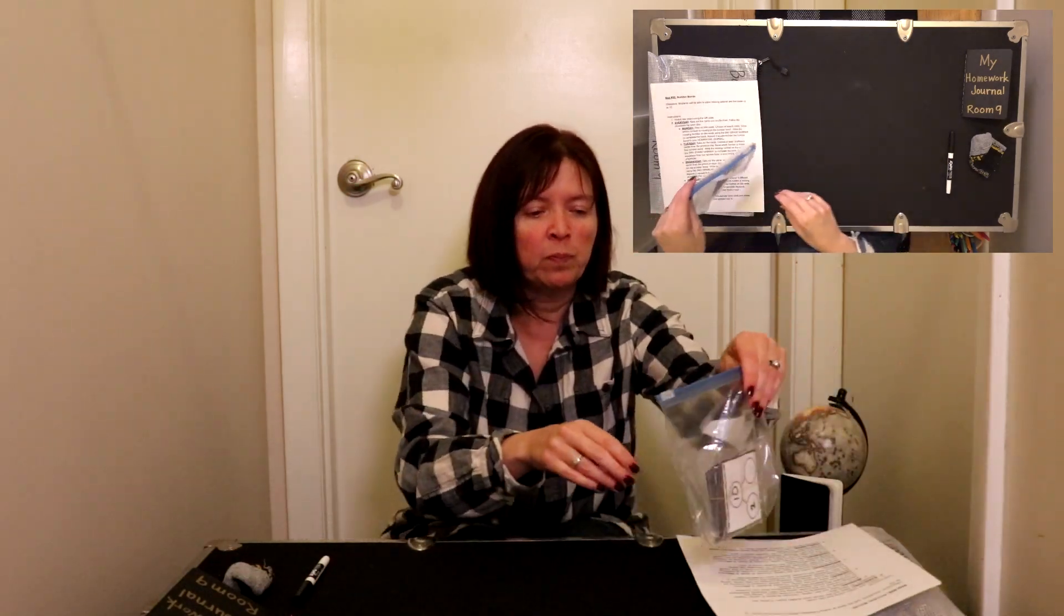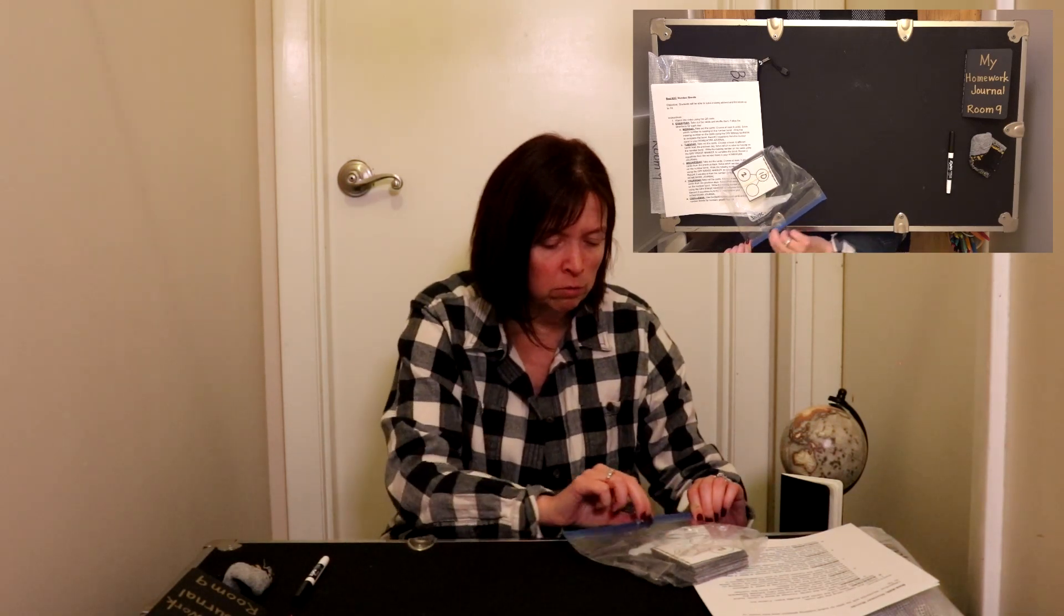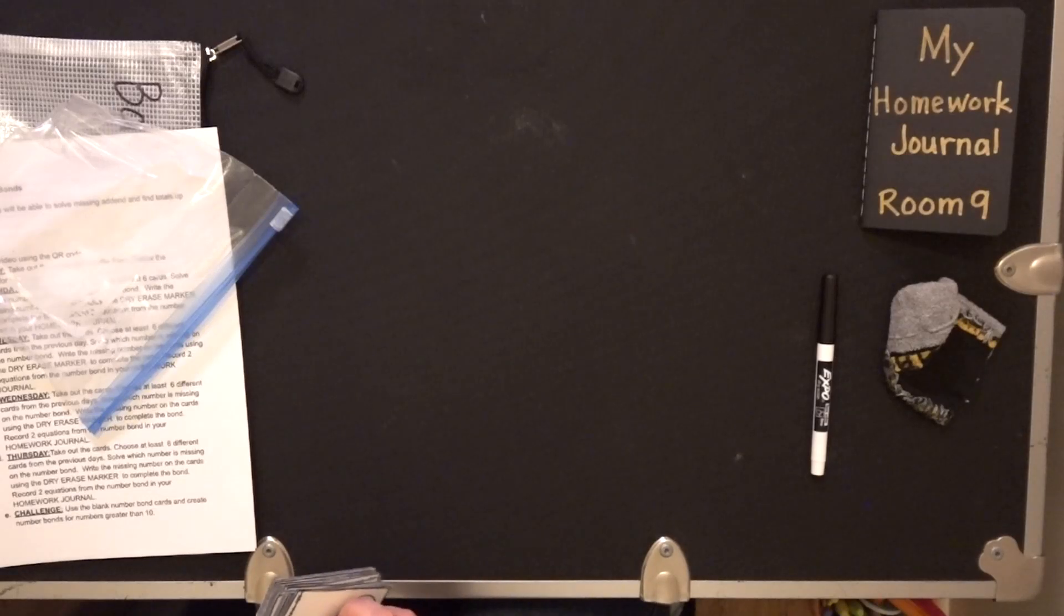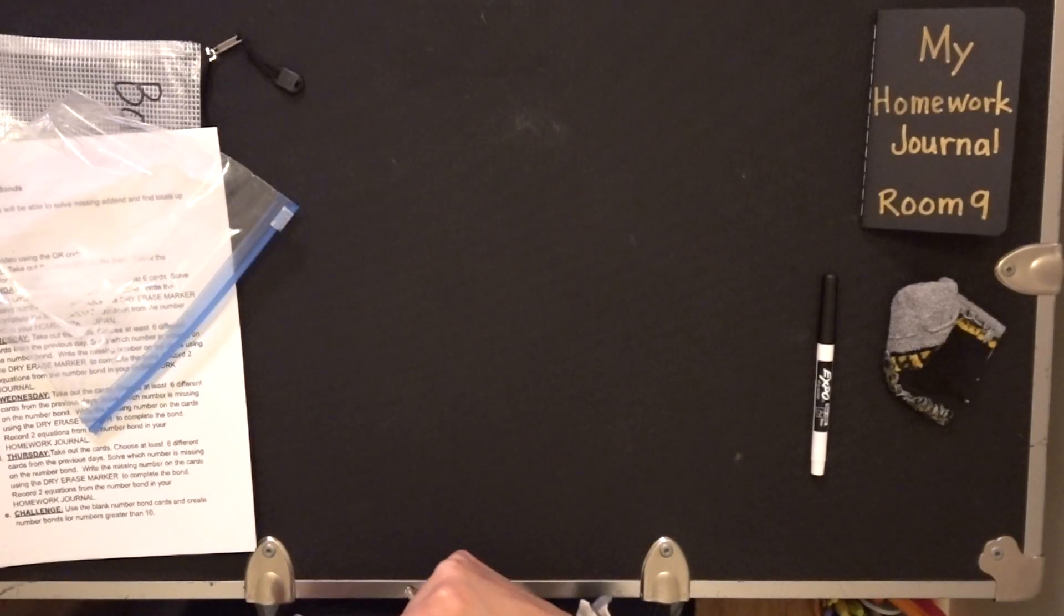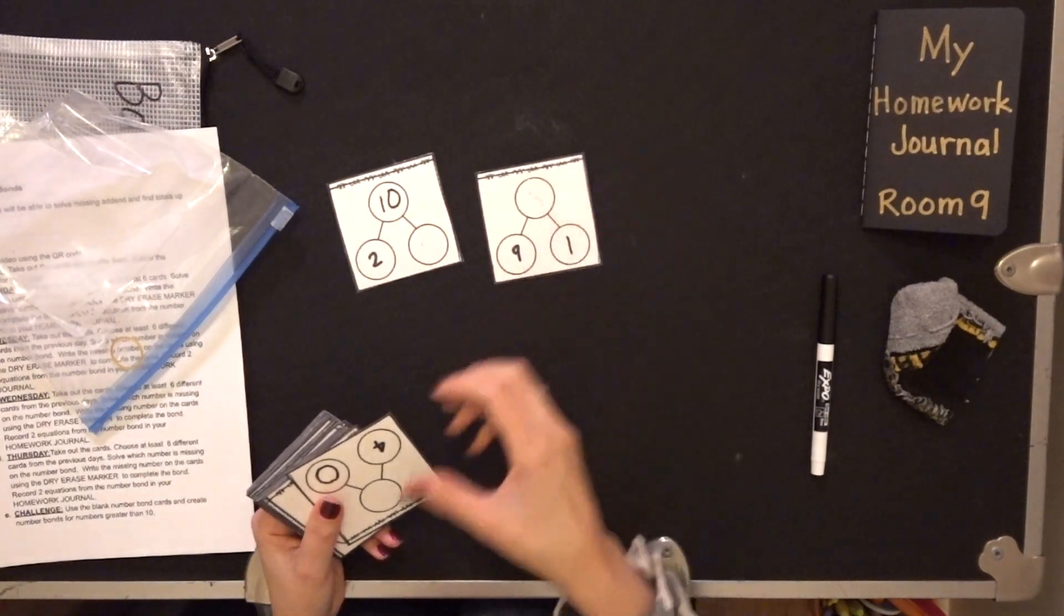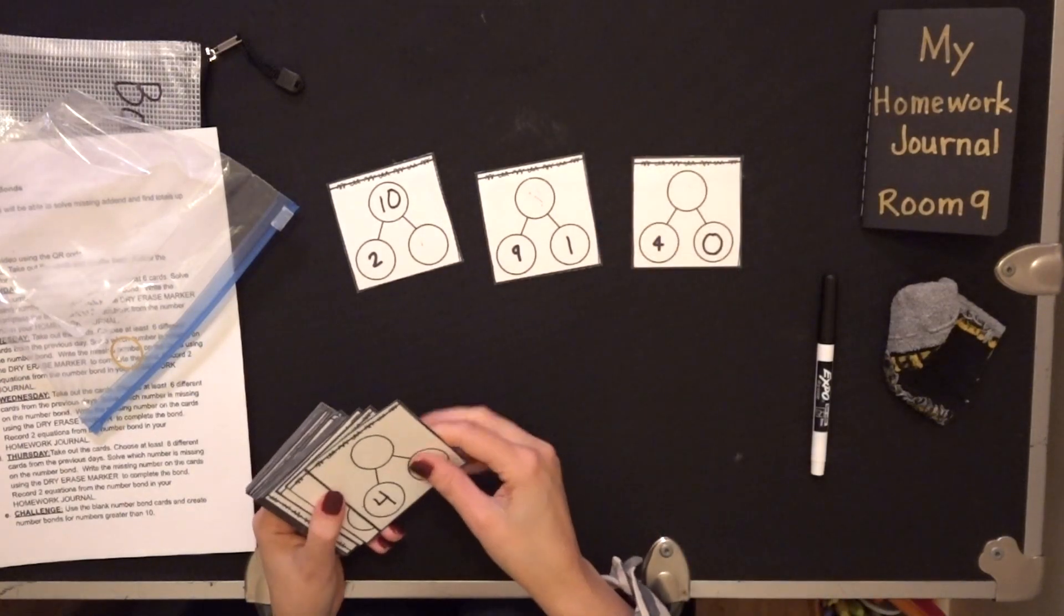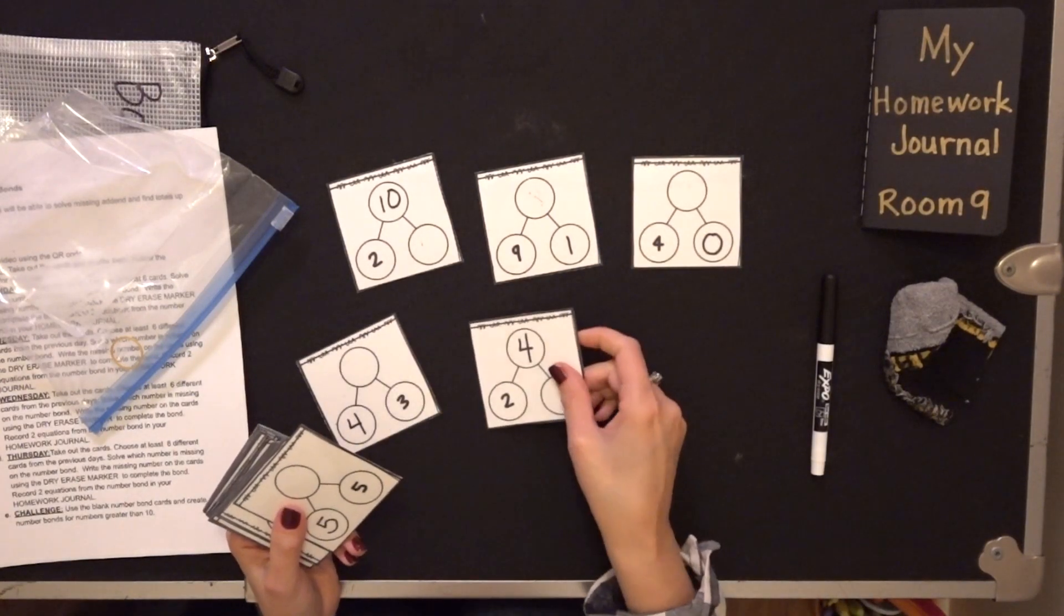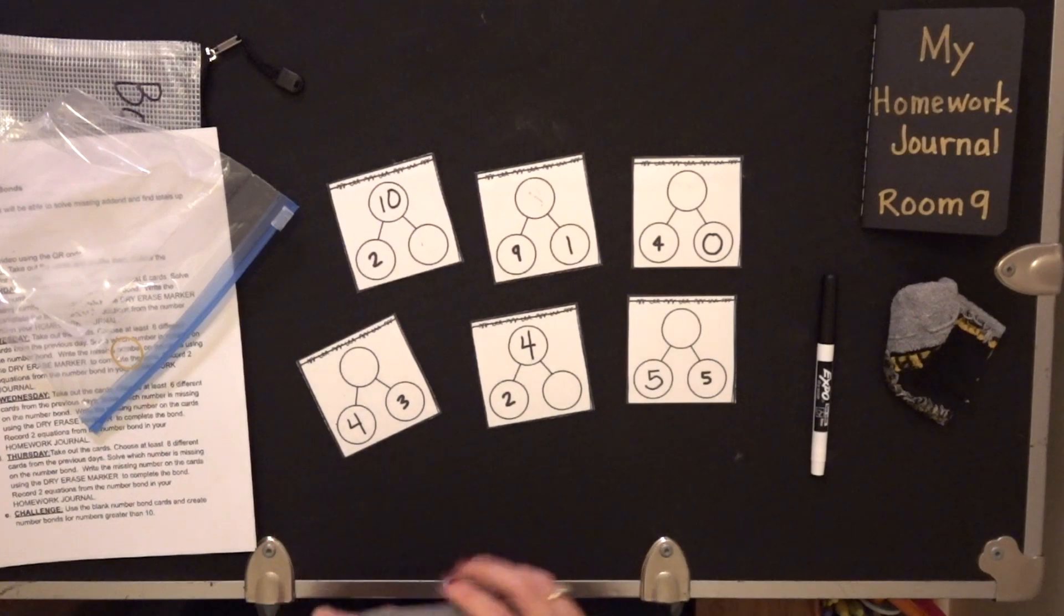This is what we are going to do every day. You're going to play the game the same way. You're going to take out your number bonds and you're going to choose six cards. Six of them, doesn't matter which six. You're going to choose six cards: one, two, three, four, five, six.